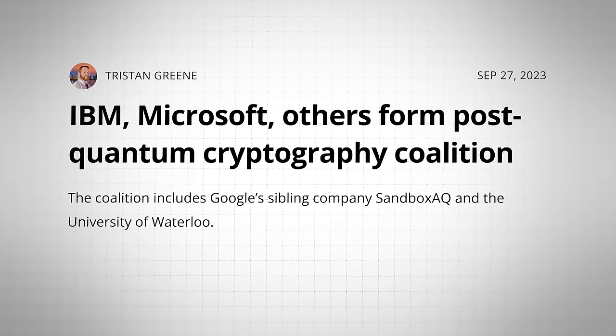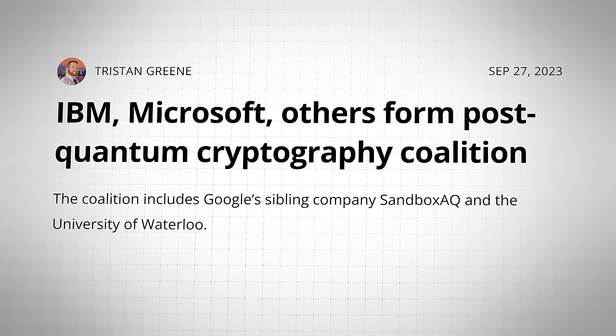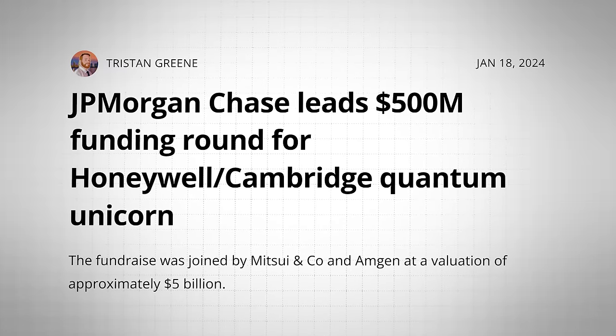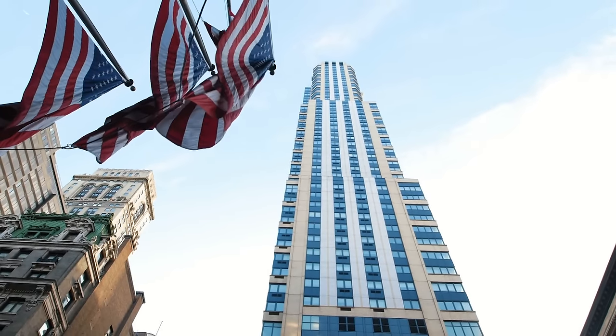Besides all the news about quantum breakthroughs, there's been lots of news about quantum-related funding, partnerships, and protections over the last year or so. IBM, Google, and Microsoft formed a post-quantum coalition last September. In November, a UK quantum computing company announced it had raised $100 million from Japan's SBI. And earlier this year, JP Morgan led a $500 million funding round into a US-based quantum computing firm, giving it a valuation of over $5 billion — that is AI-level valuation.